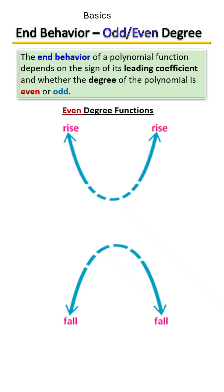The bottom line is if the leading coefficient is greater than zero, then both ends are going to rise up. And if the leading coefficient is less than zero, then both ends are going to fall down.